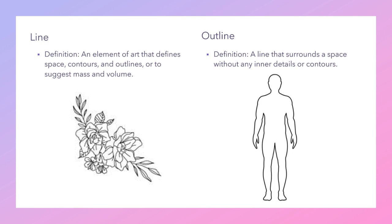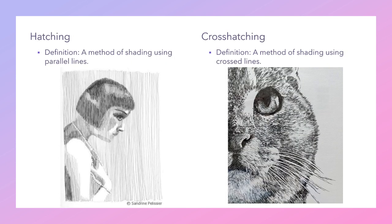Hatching is a method of shading using parallel lines. Cross-hatching is a method of shading using crossed lines, or lines that go in multiple directions.